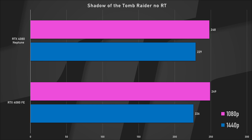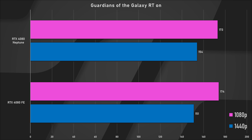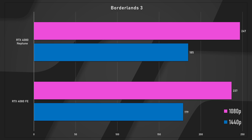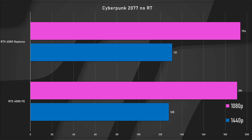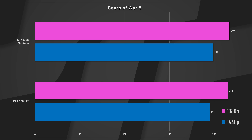Shadow of the Tomb Raider with no RT: 248 versus 249 in 1080p, and 229 versus 226 in 1440p — completely impossible to tell the difference. Guardians of the Galaxy with RT on: 173 versus 174, and 154 versus 151 in 1440p — only a three FPS difference. Borderlands 3: 247 to 237 — 10 FPS — but once you're up in the 250 FPS range you won't notice 10 FPS. 185 versus 179 in 1440p. Cyberpunk: 194 to 191, 131 to 128. Forza Horizon 5: 167 to 166, 155 to 153. Gears of War 5: 217 to 215, 199 to 195 in 1440p. You're not going to notice these differences.